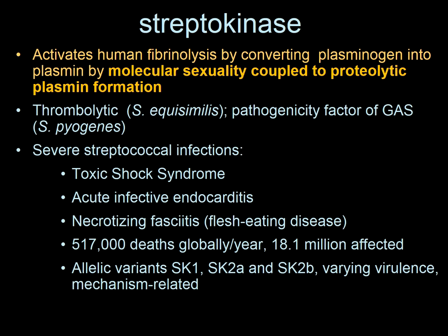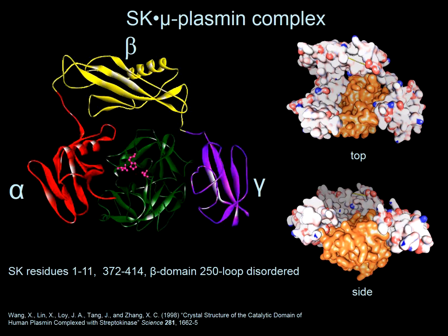The only crystal structure for streptokinase bound to the catalytic domain of plasmin was done by Kai Zhang at the Oklahoma Medical Research Foundation. SK obviously has three tightly folded domains — alpha, beta, and gamma from the N- to C-terminus — linked by flexible segments. This means that in solution, streptokinase has essentially no structure; its domains behave like three balls on a string, which is probably why it has never been crystallized alone.